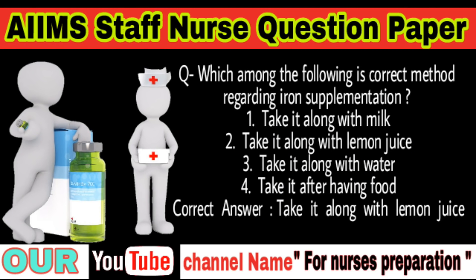Question: Which among the following is the correct method regarding iron supplementation? Options: Take it along with milk, take it along with lemon juice, take it along with water, take it after having food. Correct answer is take it along with lemon juice. Always take iron supplements on an empty stomach with lemon water, orange juice or a Vitamin C supplement to help absorption. Avoid taking with tea or coffee, which contain compounds that can inhibit iron absorption.